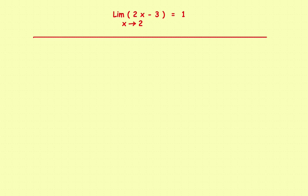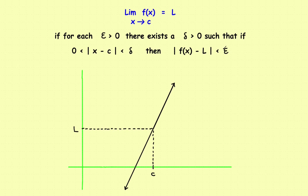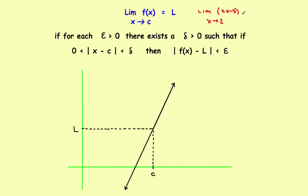Let's go back and write down the things that we know. We've got the limit of 2x minus 3 as x approaches 2, and we want to show that's equal to 1. Now on the graph, let's mark down the things that we know.